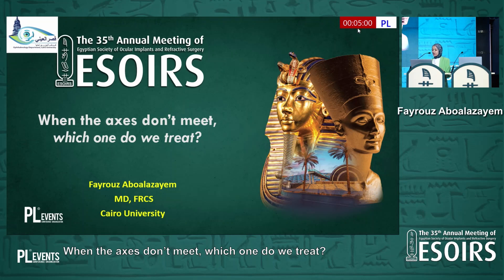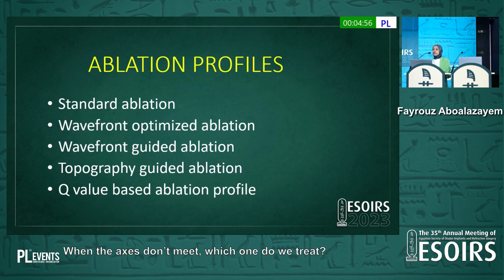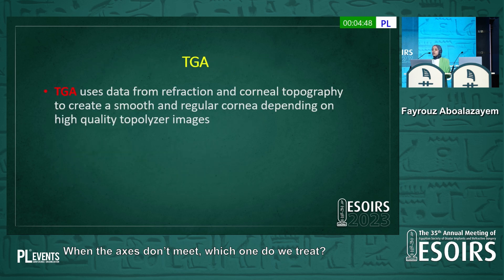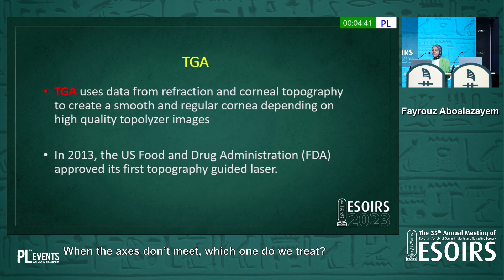Good evening, everyone. I'm going to talk about when the axes don't meet, which one do you treat? Different ablation profiles are present, while my talk will be about topography-guided ablation. The topography-guided ablation, or Contura, uses data from refraction and the corneal topography to create a smooth regular cornea depending on high-quality topolizer images.